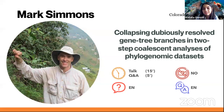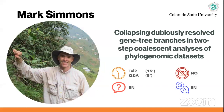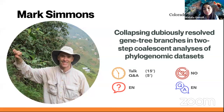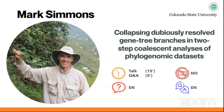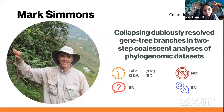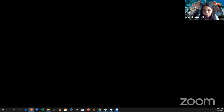Our next and last speaker for this phylogenetic inference symposium is Dr. Mark Simmons. His talk is 'Collapsing Dubiously Resolved Gene Tree Branches in Two-Step Coalescent Analysis of Phylogenomic Data Sets.' The 15-minute talk will be followed by a 5-minute Q&A. Please note we will not be recording or streaming this talk as we do not have permission to do so — please refrain from sharing any materials from it. Dr. Simmons is a professor and herbarium curator at Colorado State University, with research on conceptual aspects of molecular phylogenetics and systematics of the flowering plant family Celastraceae. Welcome, Dr. Simmons.